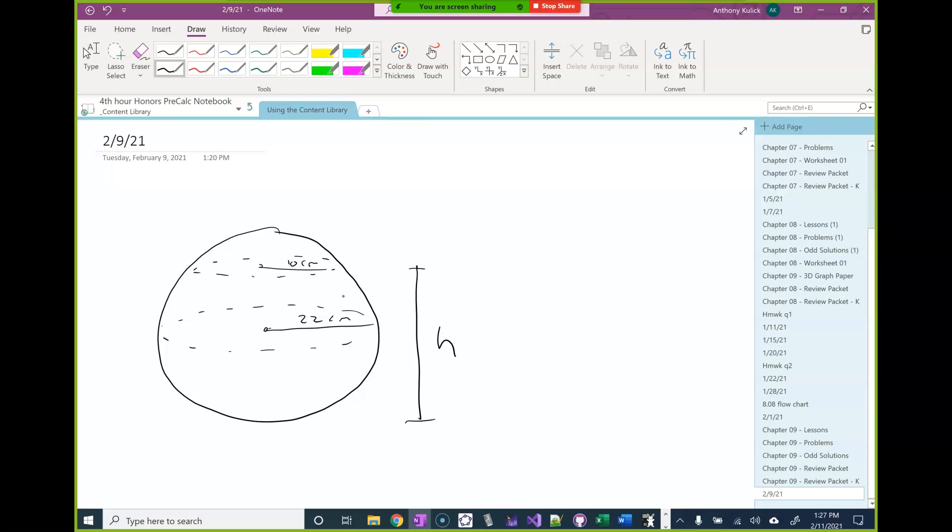Okay, so this is the trick. This is 22 here, right, because that's a radius. This we don't know. I'm going to call that piece x then. That's not a full radius. Agreed?